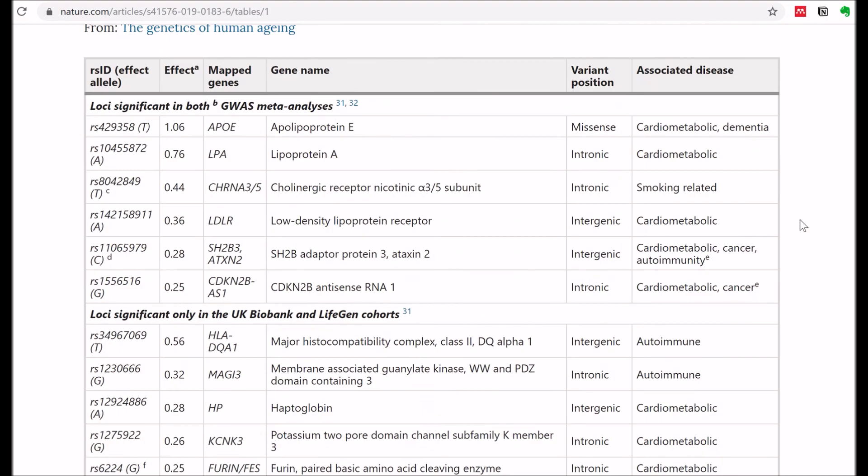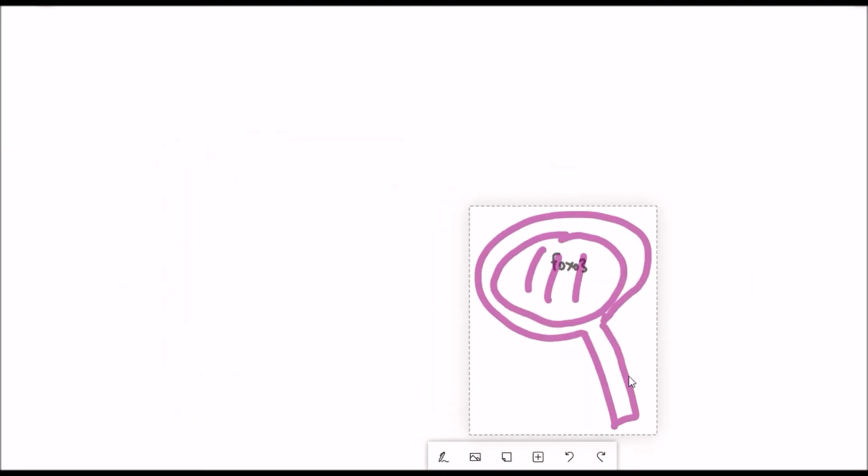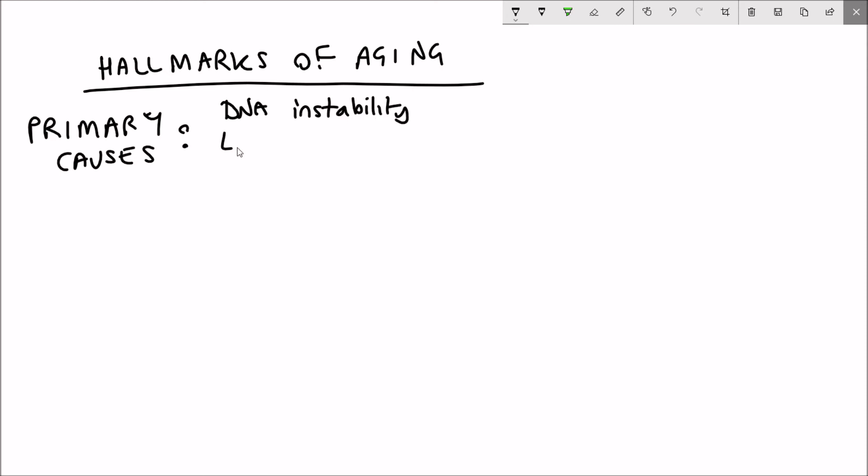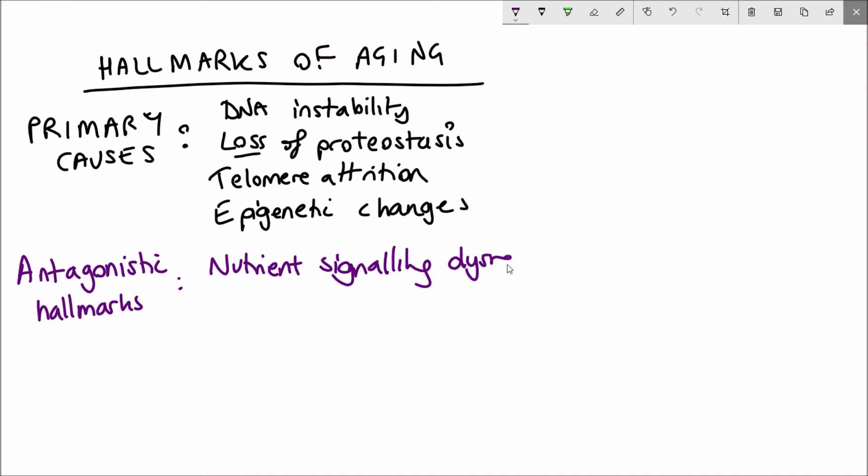Another variant that also wasn't in the list was FOXO3A, which encodes FOXO3A. That should say FOXO3A. I just now just said FOXO3A too many times. And anyway, this encodes a transcription factor that influences energy metabolism, cell cycle regulation, and inflammation. And so it's very tightly linked to the hallmarks of aging.